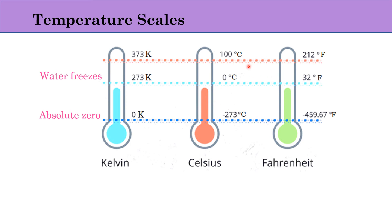The boiling point of water is 100 degree Celsius. In Fahrenheit this is read as 212 degree Fahrenheit, and in the Kelvin scale it is 373 Kelvin. So the boiling point, freezing point, and absolute zero are the same physical points but read differently on each measuring scale.